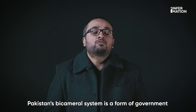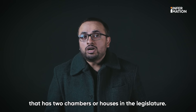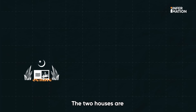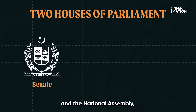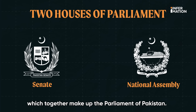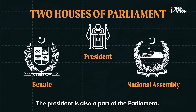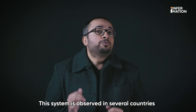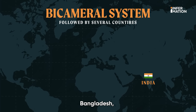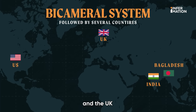Pakistan's bicameral system is a form of government that has two chambers or houses in the legislature. The two houses are the Senate and the National Assembly, which together make up the parliament of Pakistan. According to the constitution of 1973, the president is also a part of the parliament. This system is observed in several countries like India, Bangladesh, United States and United Kingdom, among others.